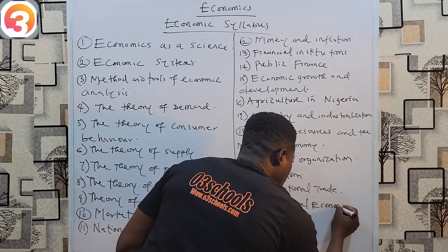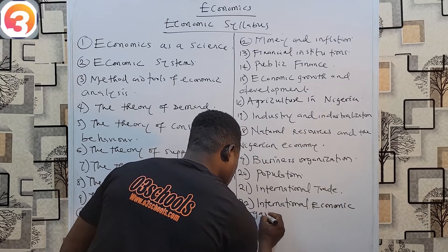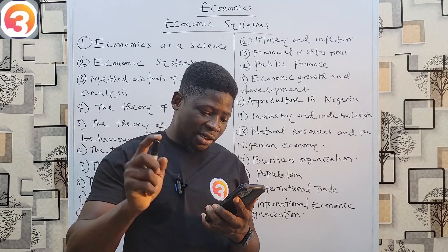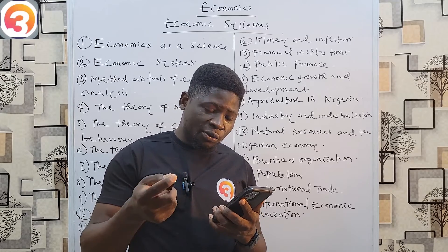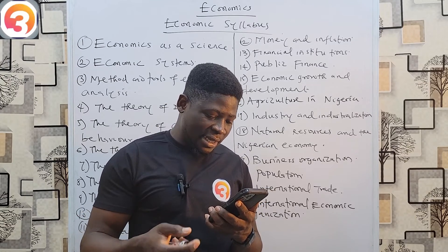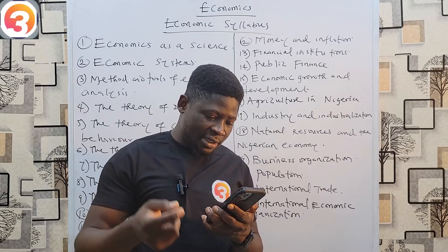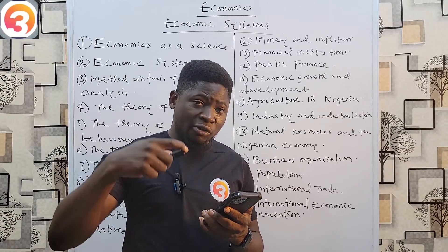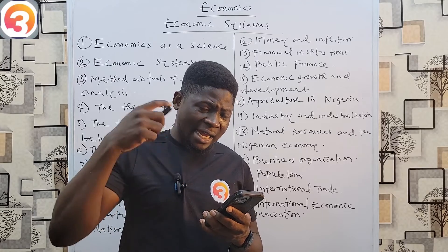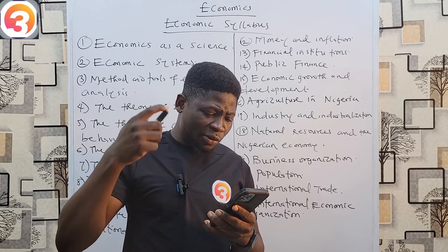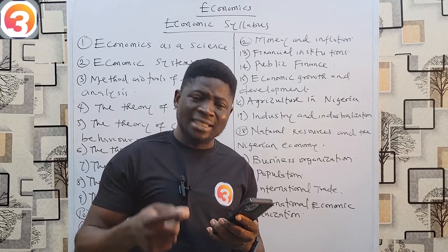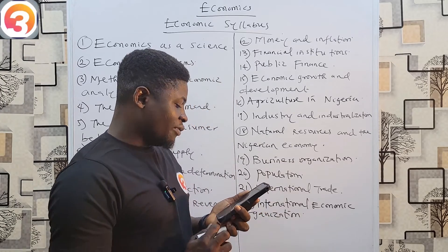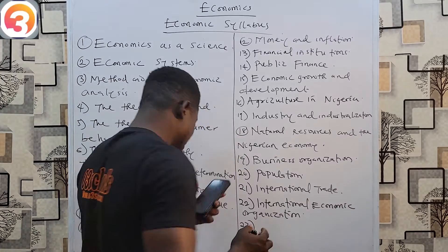Number twenty-two is International Economic Organizations. Under this, look at the roles and relevance of international organizations such as ECOWAS, the AU, the EU, the ECA, the IMF, the EEC, the OECD, the World Bank and IBRD, the World Trade Organization (WTO), the African Development Bank (ADB), and UNCTAD, among others — and their roles in Nigeria.